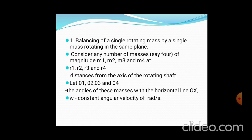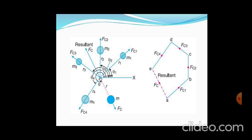For the balancing of single rotating masses in a single plane: M1, M2, M3, M4 are the masses; R1, R2, R3 are the respective radii; and θ1, θ2, θ3, θ4 are the angles between consecutive masses, with angular velocity omega. The schematic diagram shows an OX axis where M1 has angle θ1, M2 has θ2, M3 has θ3, and M4 has θ4, with some resultant centrifugal force FC. The right side shows a vector polygon diagram of the different forces due to the different masses.